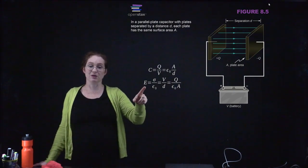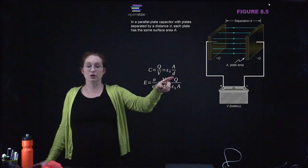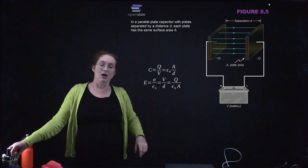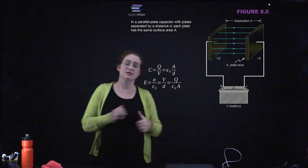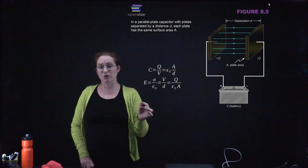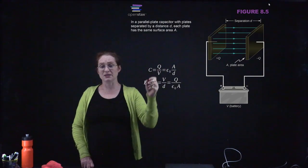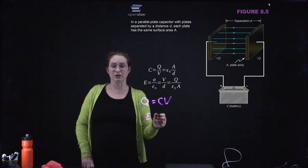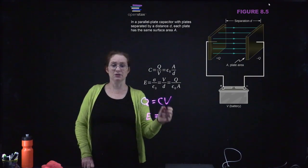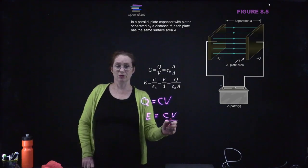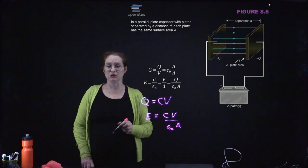In the case of a parallel plate capacitor, the capacitance equals epsilon naught times A over D, so the closer your parallel plates are to each other, the larger the capacitance. The electric field inside the parallel plates is then equal to the voltage divided by the distance, or the charge divided by epsilon naught times A. You can manipulate this — for instance, since Q = CV, you can rewrite the electric field as CV over epsilon naught A.